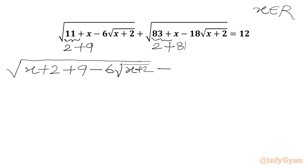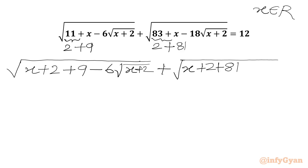Then we will write plus sign, square root of the second radicand. We split 83 plus x as x plus 2 plus 81, which is x plus 83, minus 18 times square root of x plus 2, equal to 12.